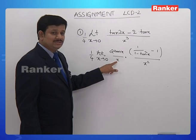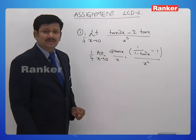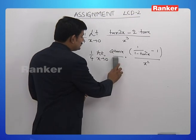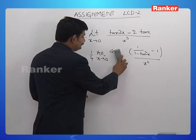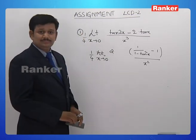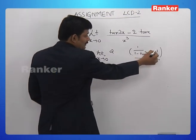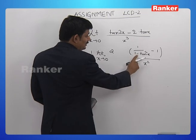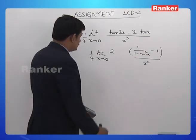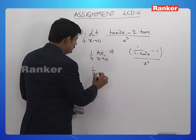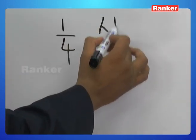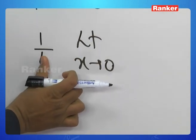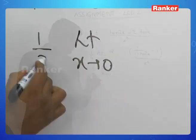We know that tanx by x as x extends to 0 is 1, so we can replace tanx by x with 1. Simplifying, taking LCM, 1 and 1 get cancelled, and minus of minus tan²x gives tan²x. We have the limit to be 1/4 times limit extending to 0, and 2 taken out of the limit cancels with 1/4 to make it 1/2.